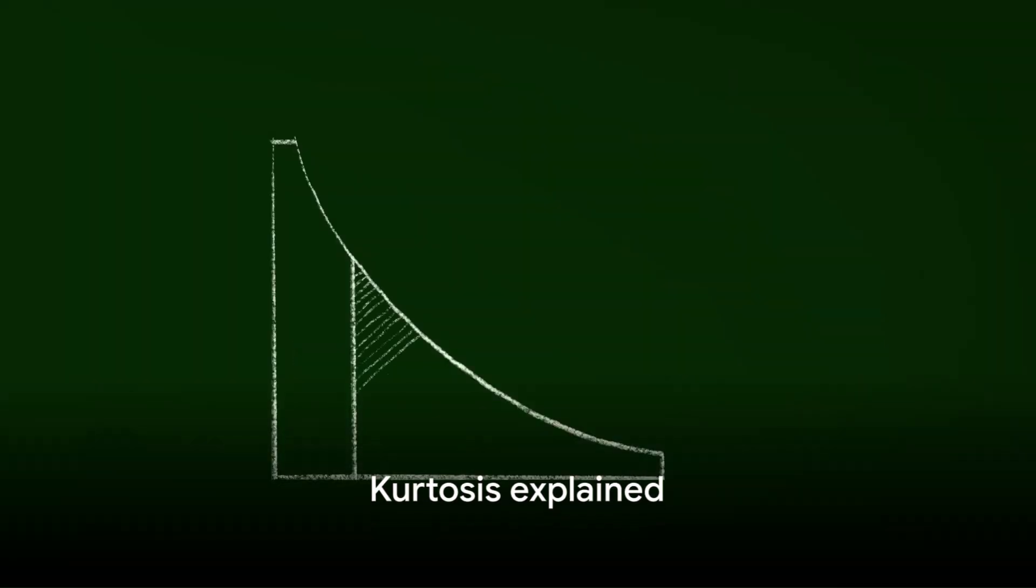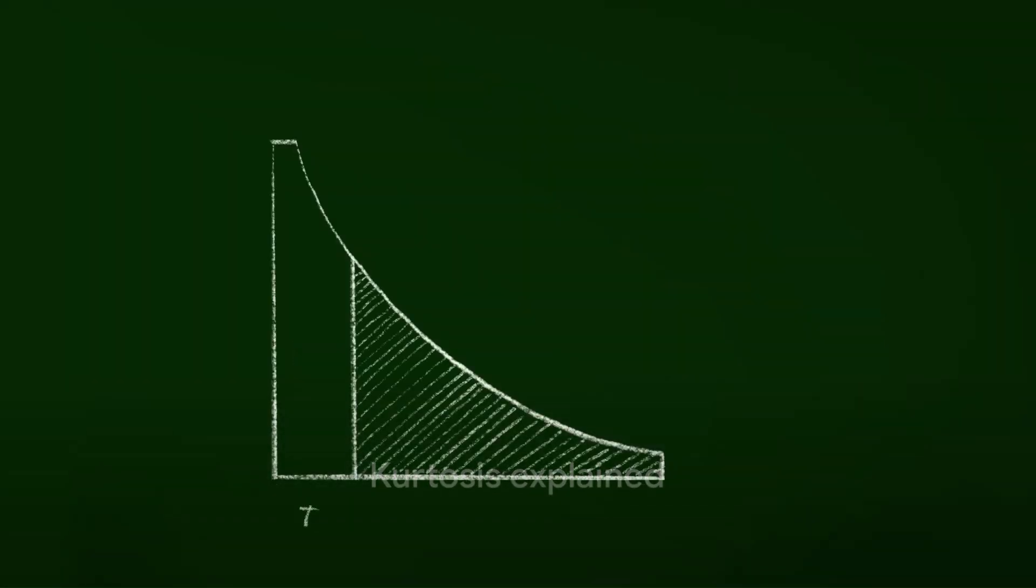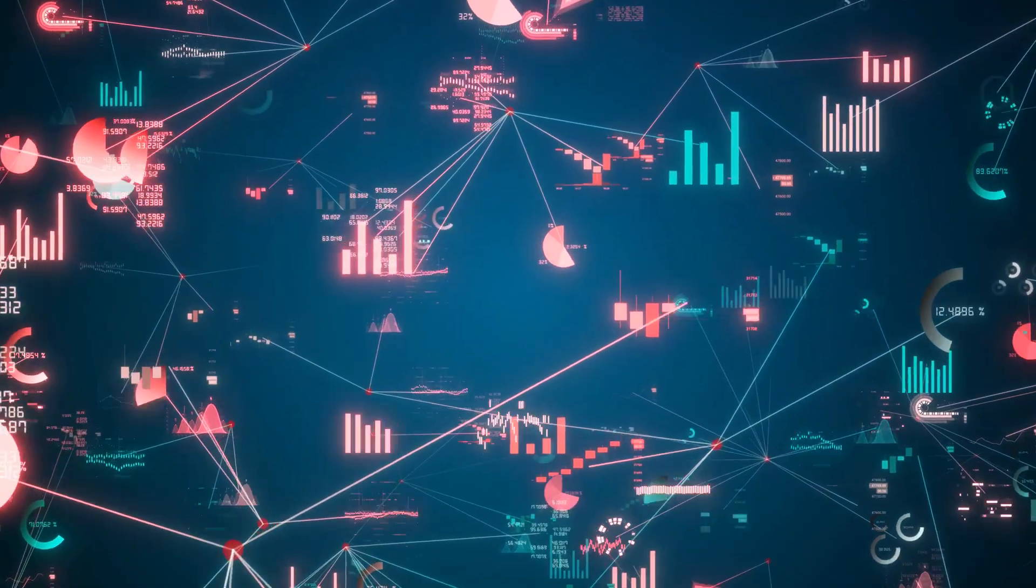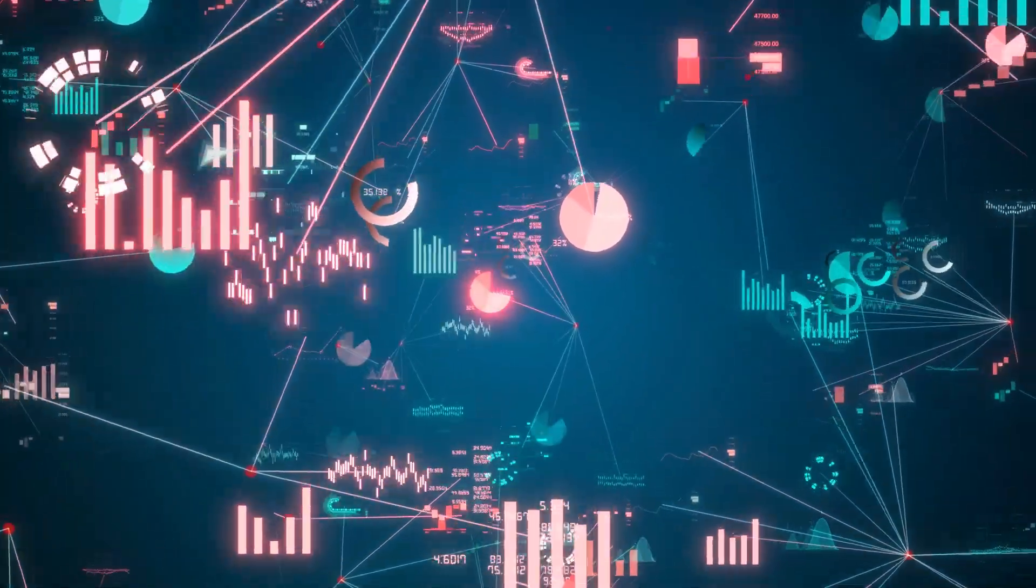Now onto kurtosis. Think of it as the measure of the tails in your data distribution. It's like imagining a dragon's tail. The longer and spikier the tail is, the higher the kurtosis.